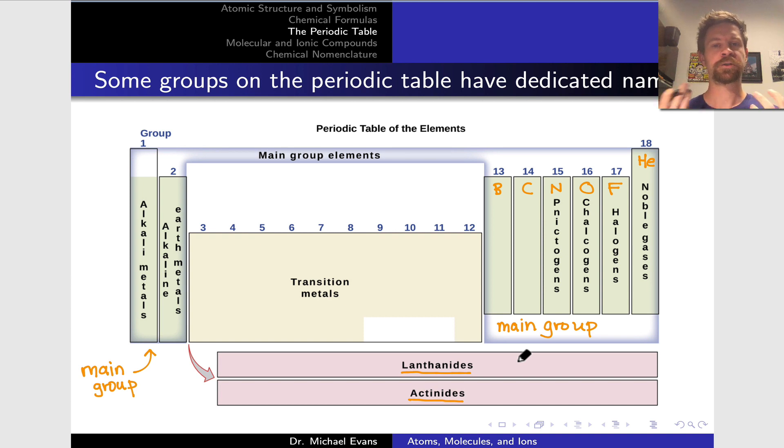It's worth noting that some groups on the periodic table have dedicated names, and these are commonly used instead of the group numbers, although using the group numbers, if you need to name a group, is totally fine.